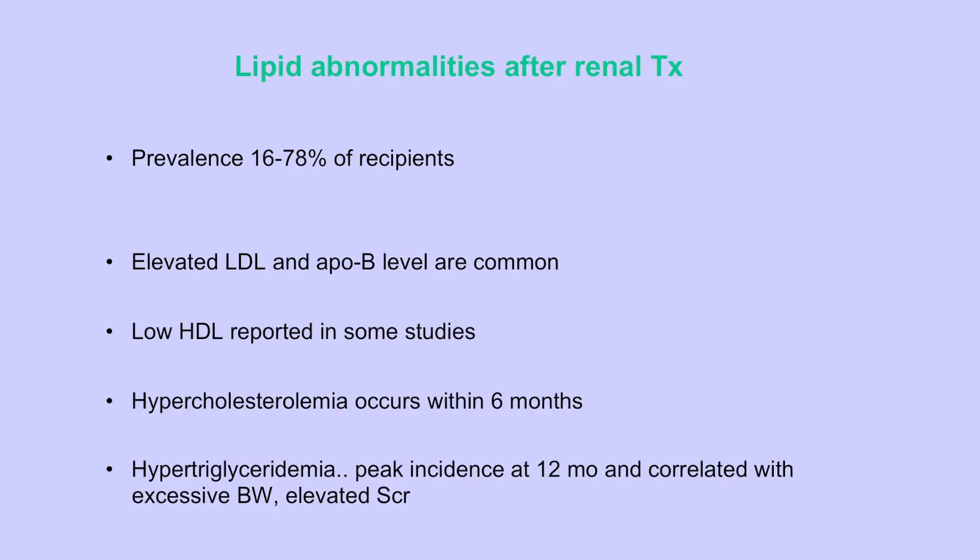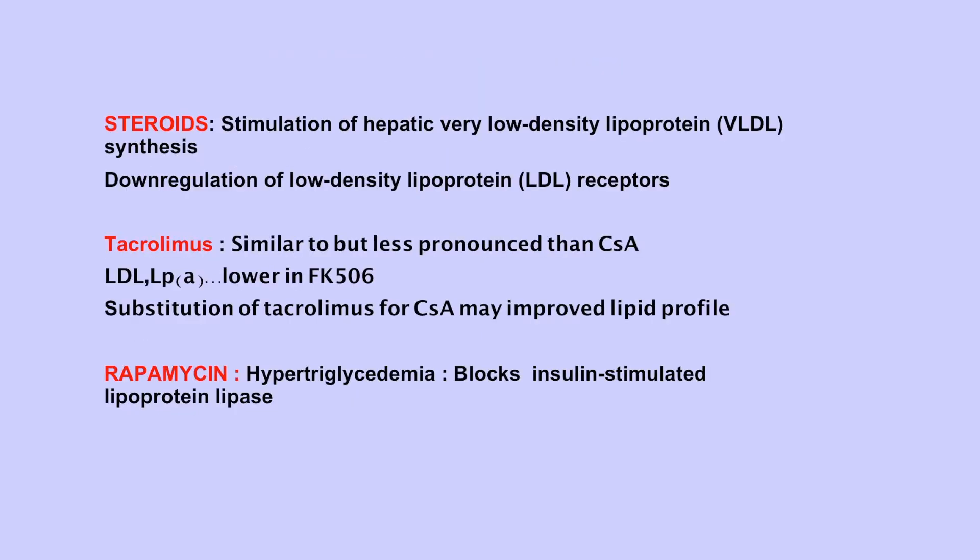Lipid abnormalities are also very prevalent — in different series, 16% to 78% of patients have it. Primarily you can have high LDL, low HDL, and hypercholesterolemia. Steroids basically stimulate VLDL — very low-density lipoprotein — and there is down-regulation of LDL receptors. Tacrolimus and cyclosporine can also cause hyperlipidemia. Rapamycin can cause hypertriglyceridemia by blocking lipoprotein lipase, so someone on sirolimus or rapamycin with high triglycerides may be related to that.